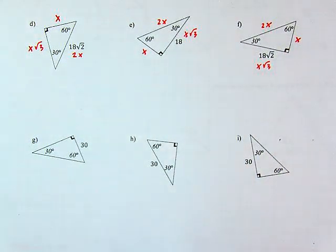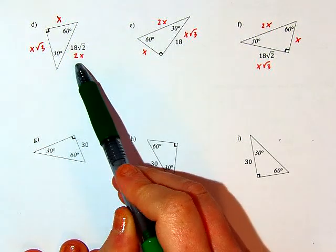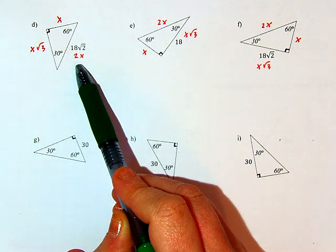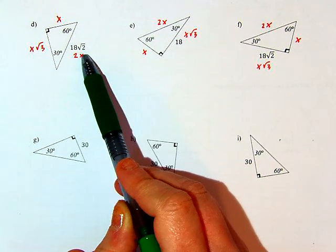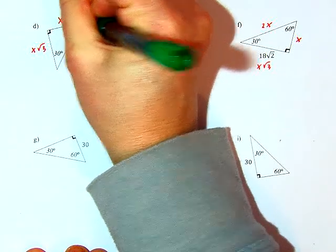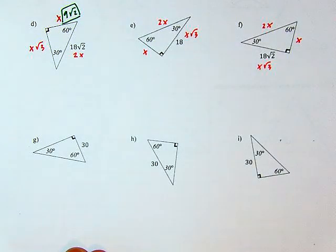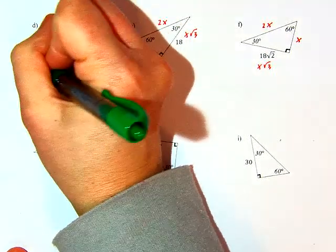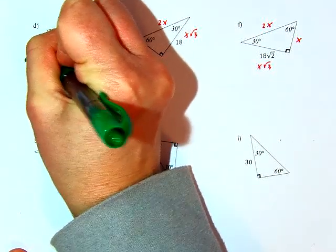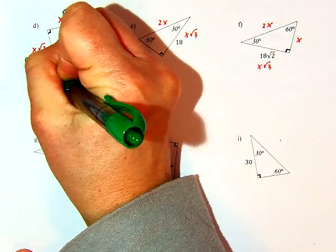Looking at the first problem in this row, I'm given the hypotenuse to start. I know that the hypotenuse is 2 times the short leg. So if I take 18 root 2 and split it in half, I get a short leg of 9 root 2. For my longer leg, I take 9 root 2 and multiply by root 3: root 2 times root 3 is root 6, so I get 9 root 6.